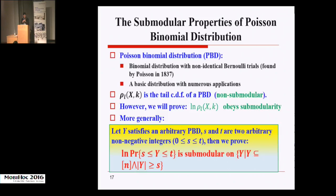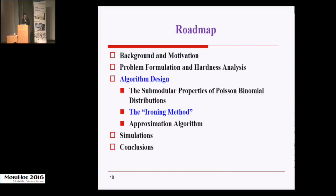More generally, we can prove that Y satisfies an arbitrary PBD, and S and T are two arbitrary non-negative integers. Then we can prove the distribution has this function property such that it is submodular. Indeed, this is one of the major contributions of this paper. However, the proof is very tricky. We omit the details here.